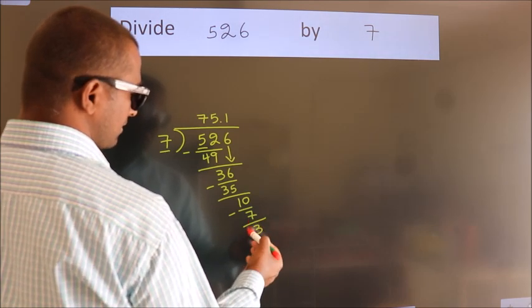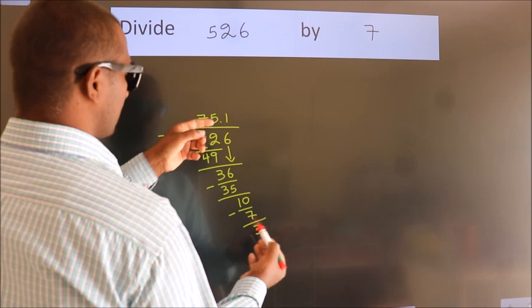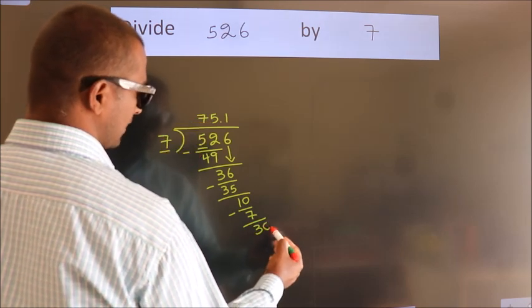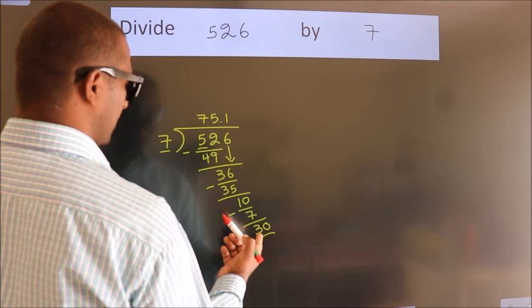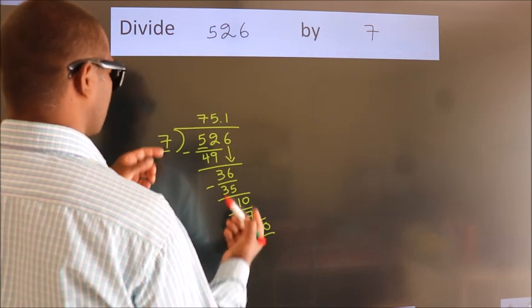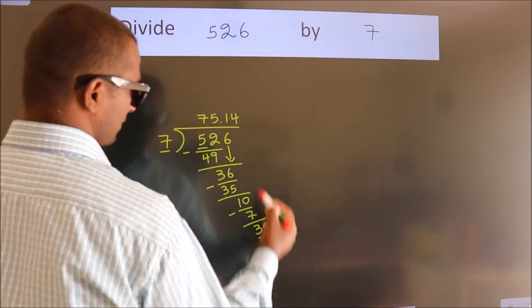After this, we already have the decimal. So, directly take 0. So, 30. A number close to 30 in 7 table is 7 fours, 28.